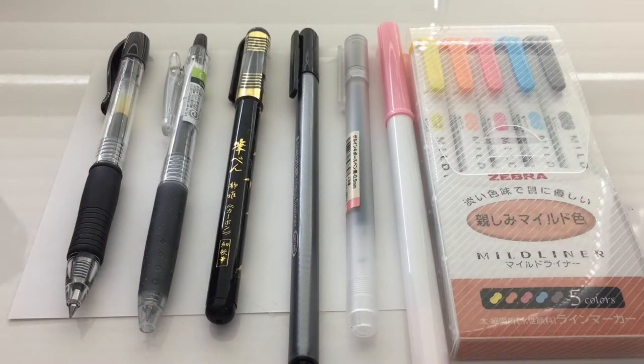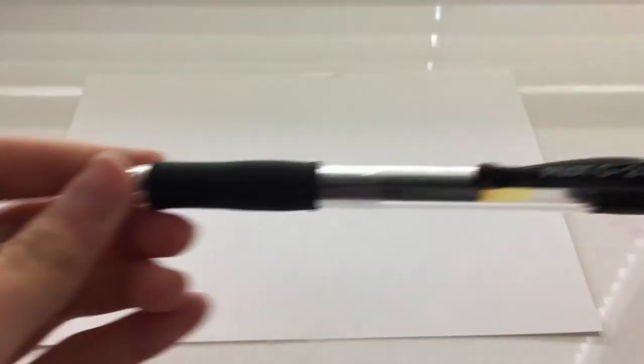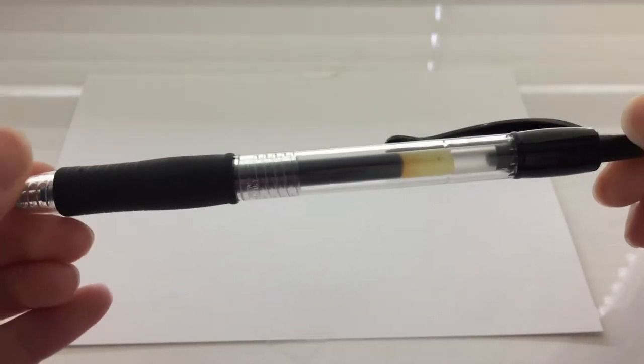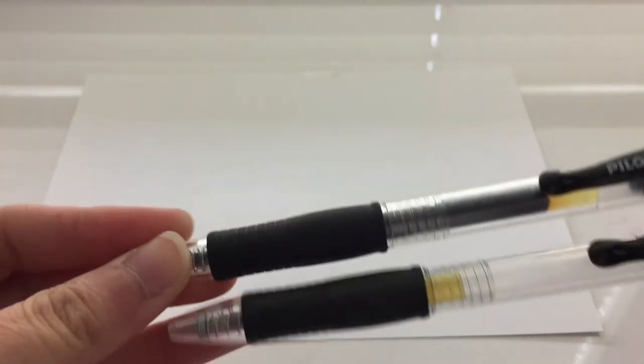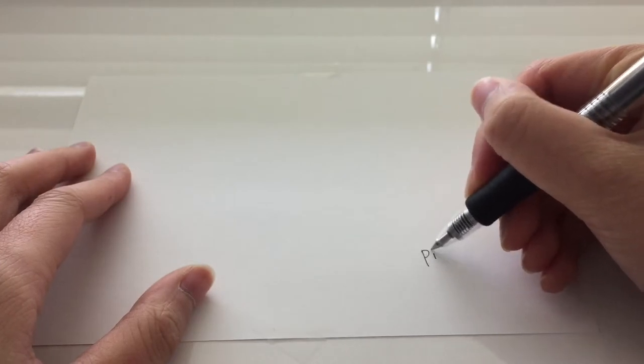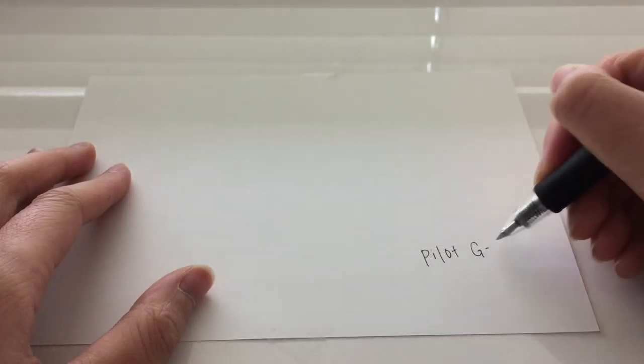Hey guys, so for today's collab YouTube channel I'll be doing a stationary favorites. Let's get started. My first favorite stationery is the Pilot G2 pen. I used this pen before the Muji pen and it comes in all different sizes like 0.38, 0.5, 0.7 and 1.0.